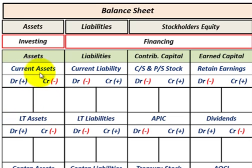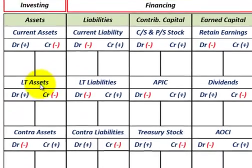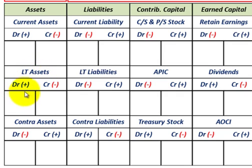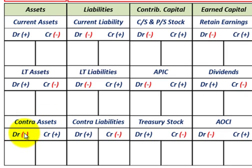Long-term assets are generally broken out between current assets and long-term assets. Now, for all our different assets and liabilities and stockholders' equity, we have what they call contra asset accounts. A contra asset account works in the opposite direction of your normal asset accounts — both current and long-term assets. For example, if you have a debit amount in your long-term assets, that would be an increase. But if you have to reduce them, you credit or reduce your long-term assets. Many times in accounting you can't directly go in and reduce your asset account, so they do it through what's called the contra asset account.